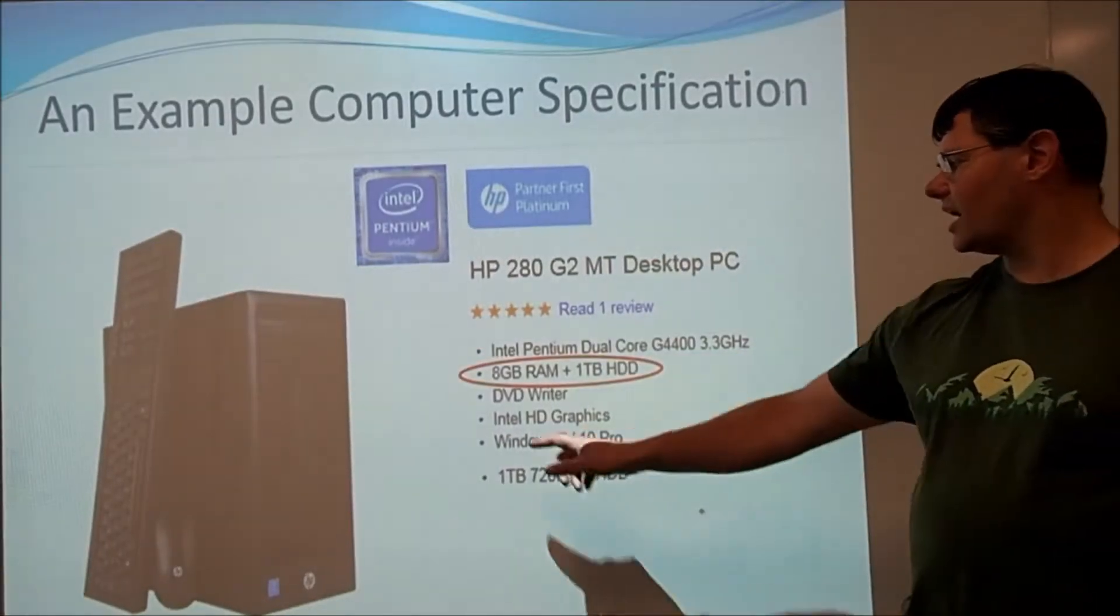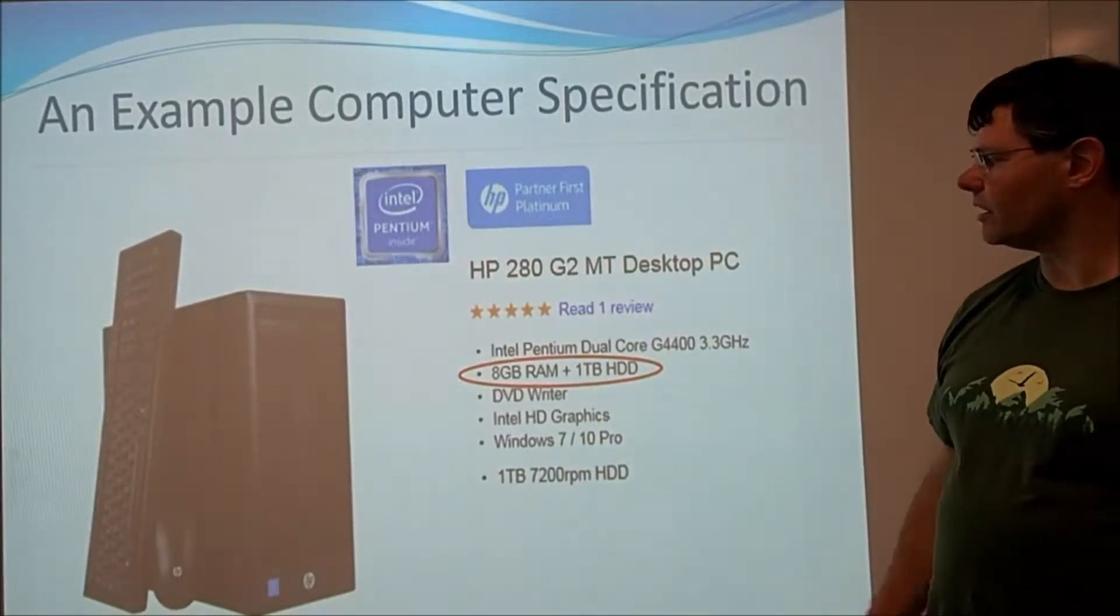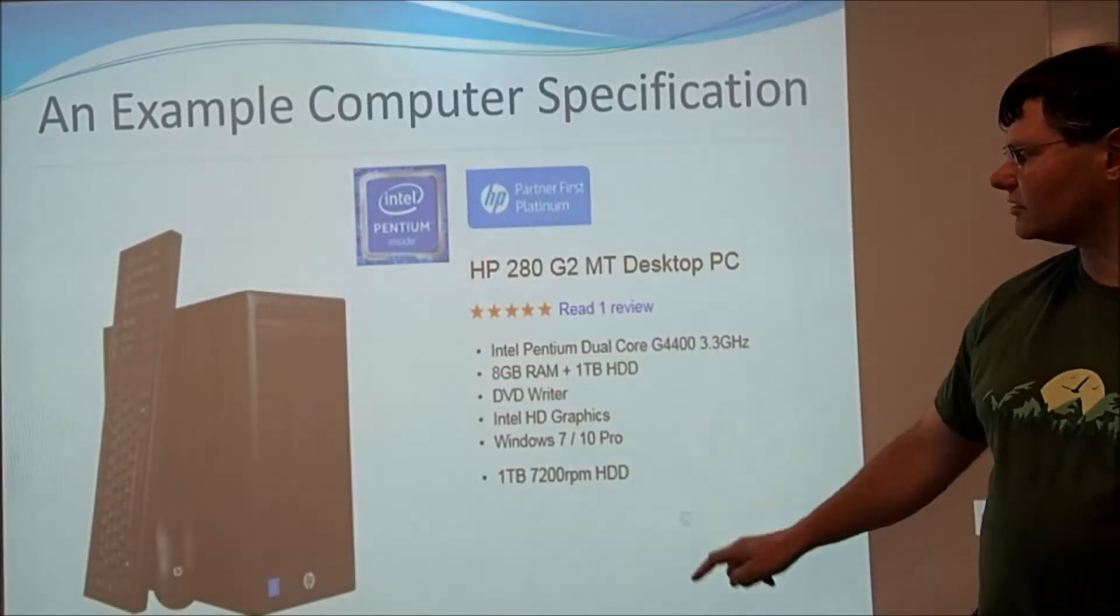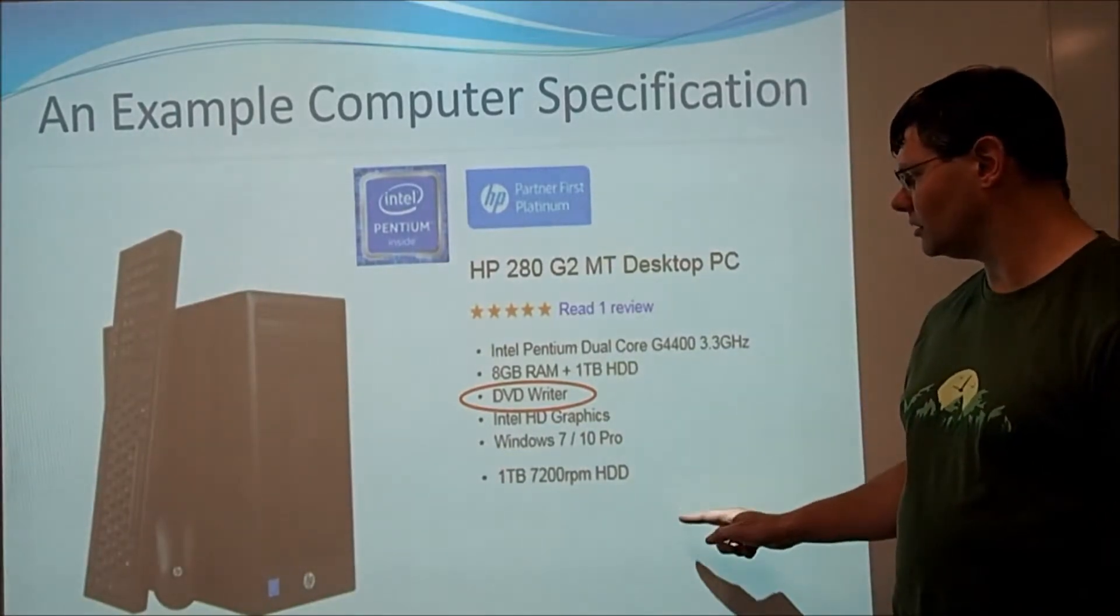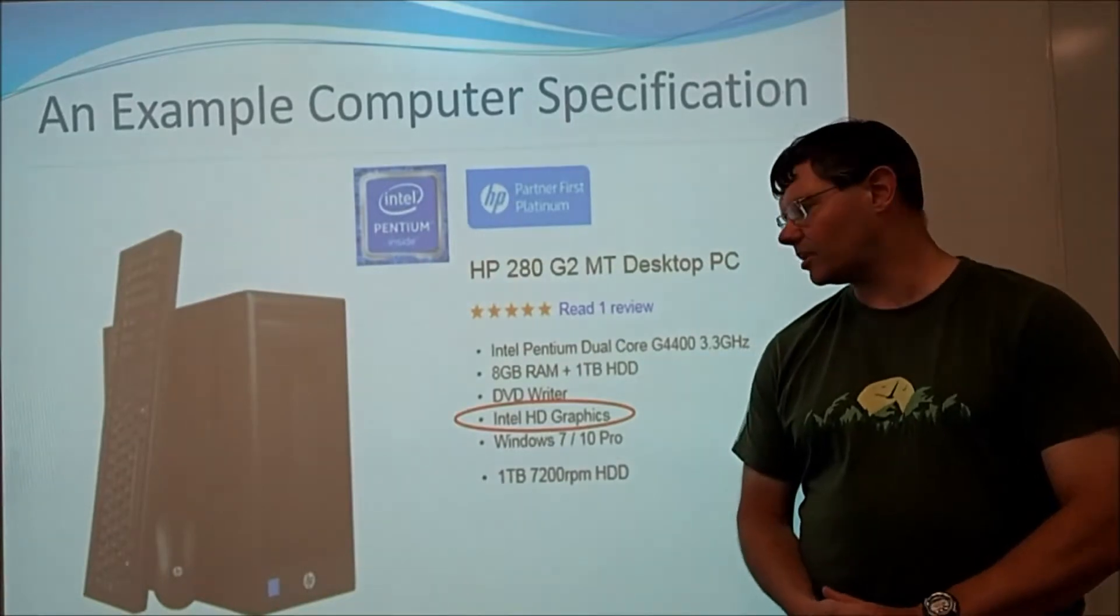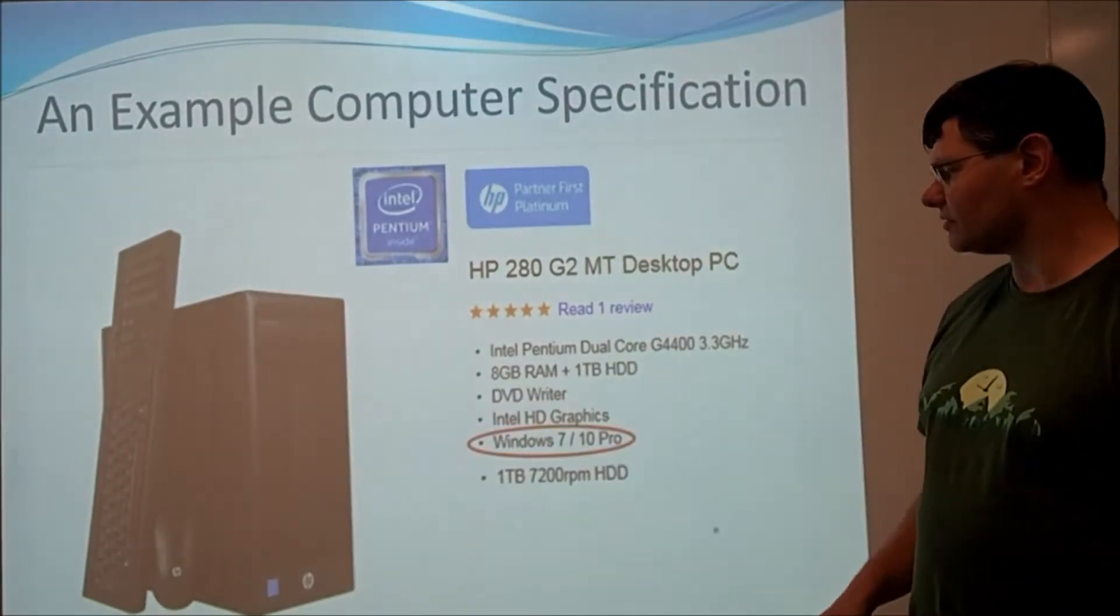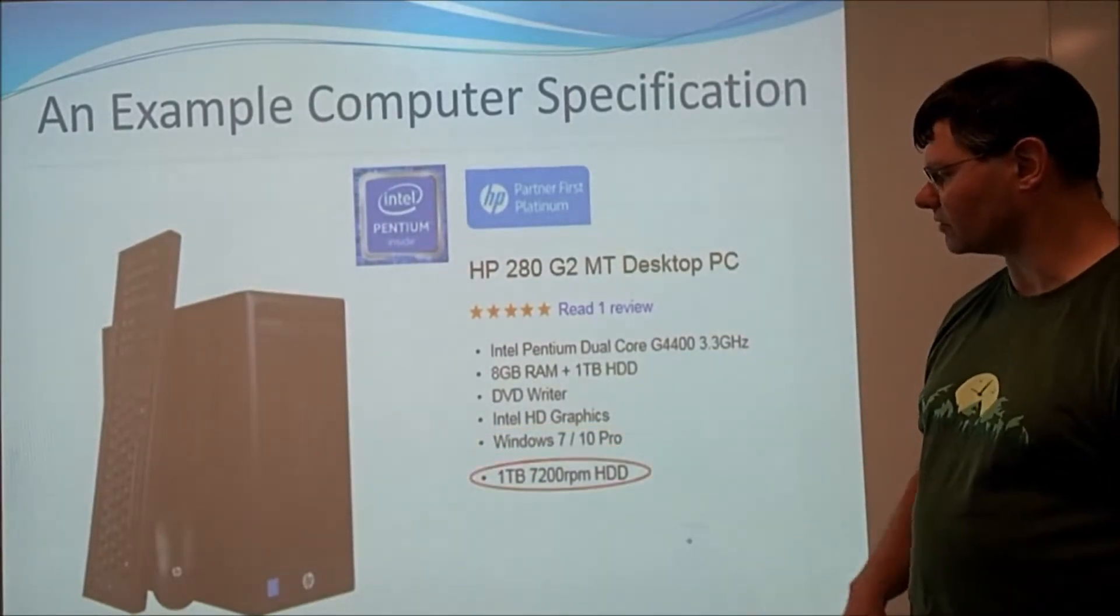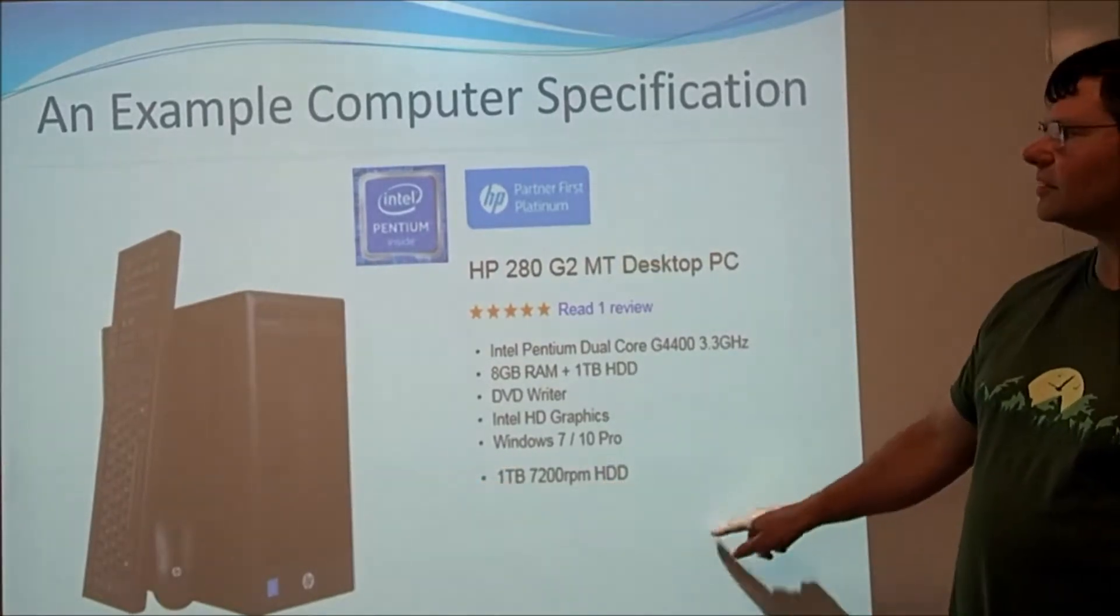Here we have a computer, and we have some information about the hardware. First of all, it says it's an Intel Pentium Dual Core G4400 3.3 GHz. That's the processor, that's the chip that powers the computer. It also says it has 8GB of RAM and a 1TB hard drive, so that's the amount of memory it's got. And it also says that it has a DVD writer.